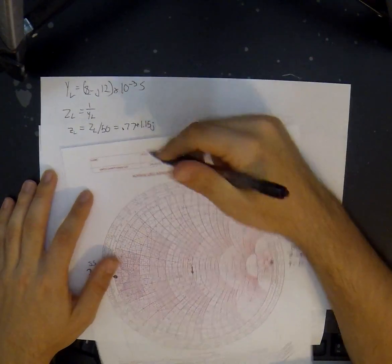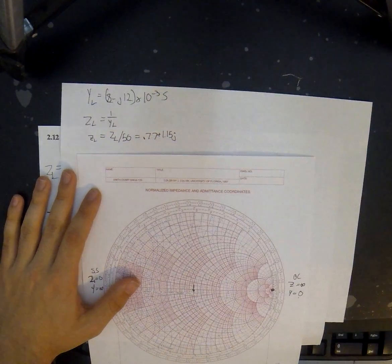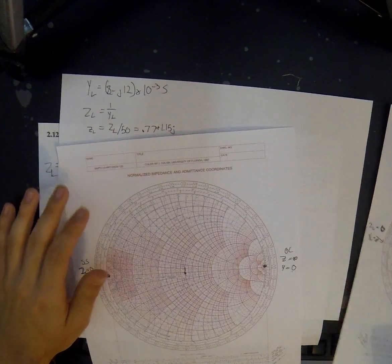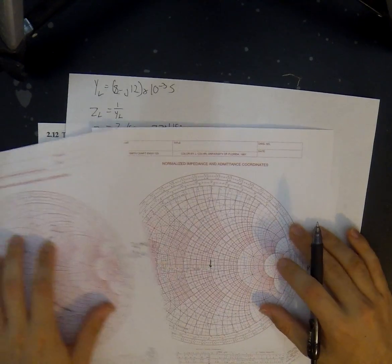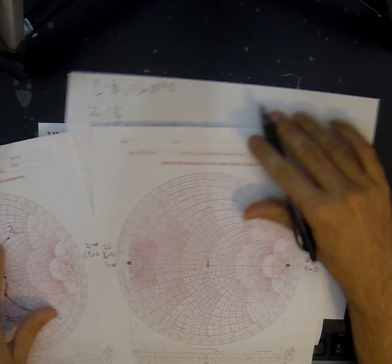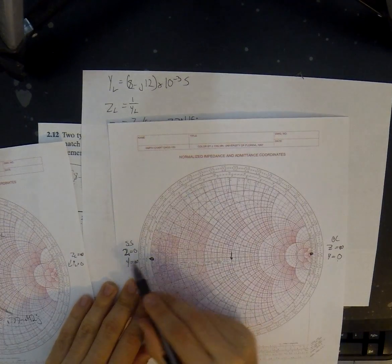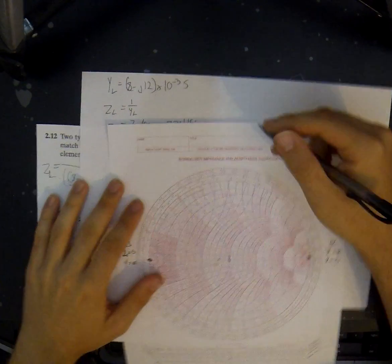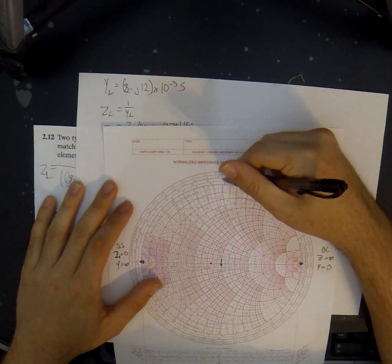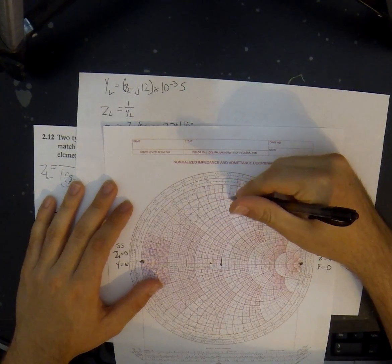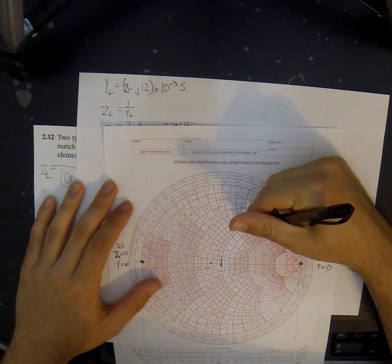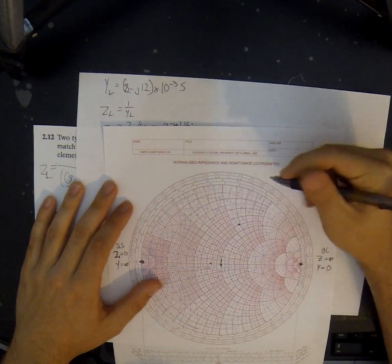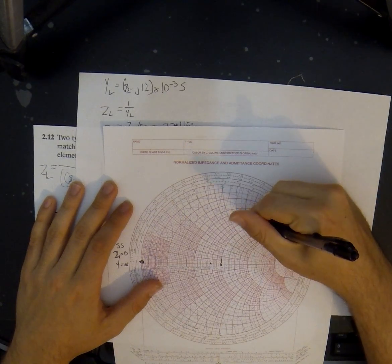We know our Z sub L normalized is 0.77 plus 1.15j. You have to normalize it to use it on the Smith chart. So this point, which I have already graphed on working it before, you should be able to realize that it's 0.77, so I'm going to be left of this 1, right? We just declared that this is 0 and this is 1, so it's going to be somewhere around here. Actually I'll just graph it again. And 1.15j, this is 1 for the j, and this is 1.2, so it's about in the middle of here, and actually in between these two. So yeah, that seems right. There we go. So this is our Z sub L.